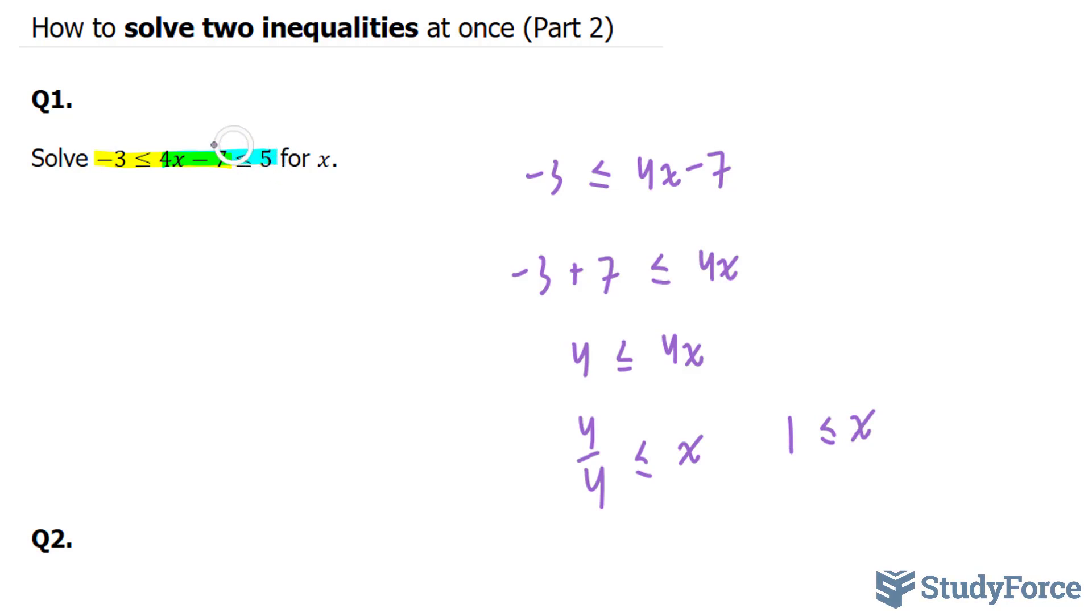Now, we're going to concentrate on this one. 4x - 7 ≤ 5. Once again, we'll solve for x here by taking this -7 over. That makes it positive. The right side simplifies to 12. And therefore, x is equal to 12 over 4, which is 3. So, the way we write this out is: x must be greater or equal to 1 and less than or equal to 3. That's your final answer.